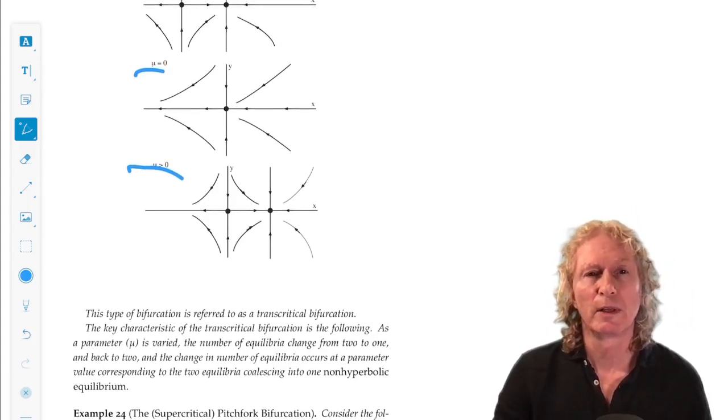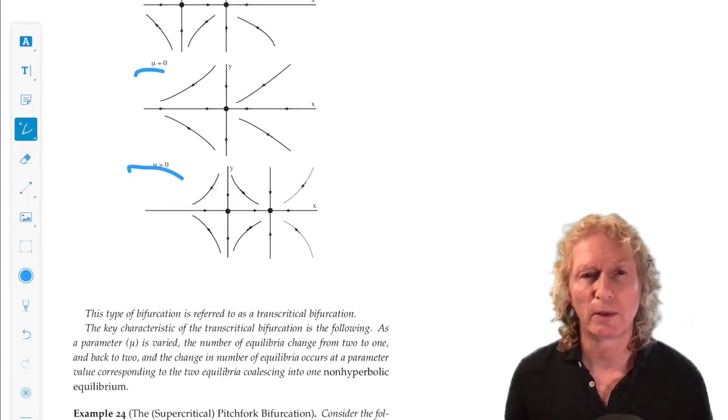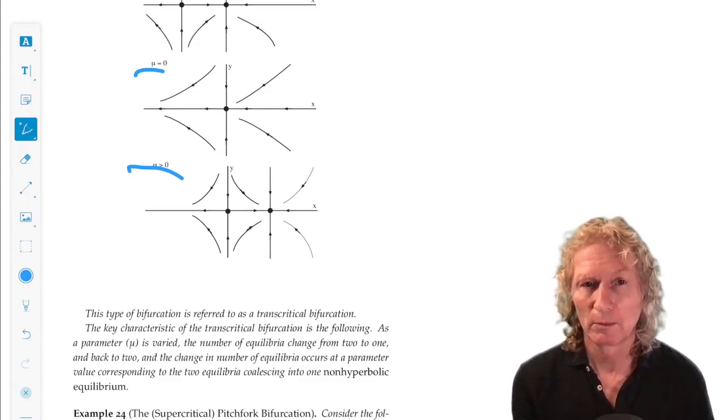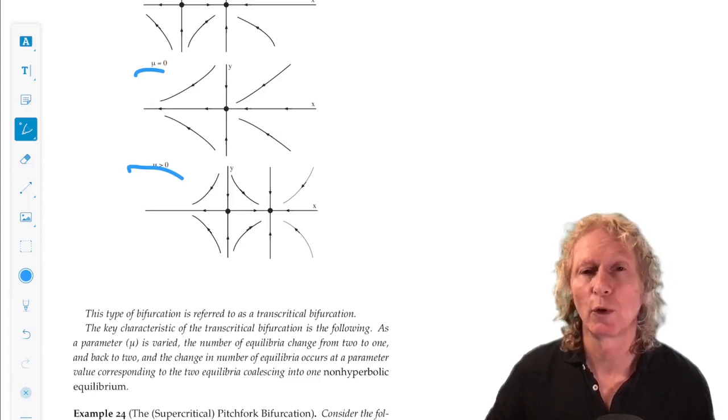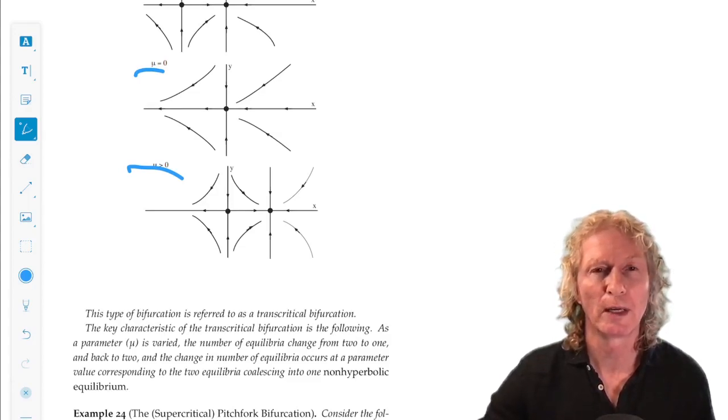Okay, that's a good place to stop now. We've done saddle node, transcritical, and in the next lecture we're going to look at the pitchfork bifurcation. So goodbye for now.